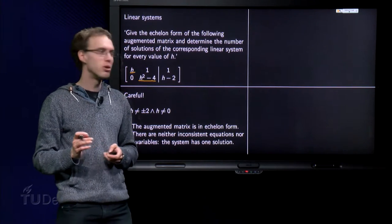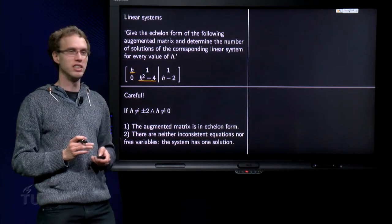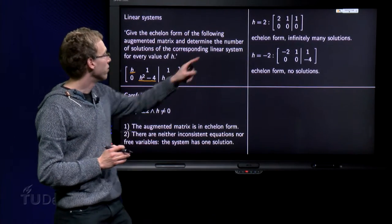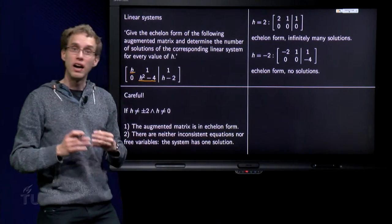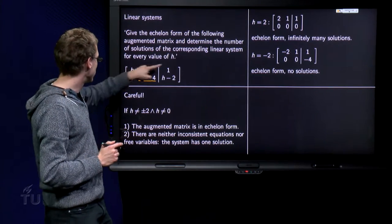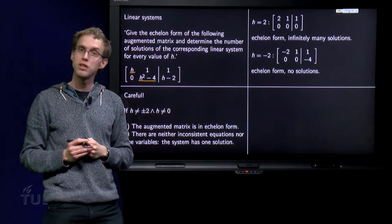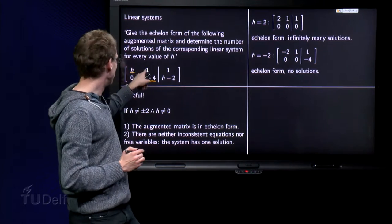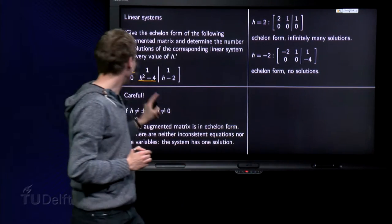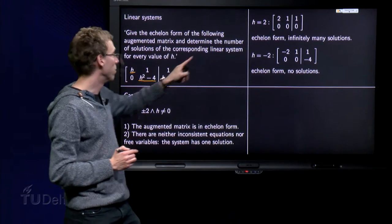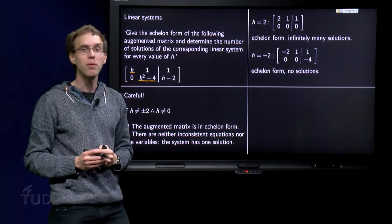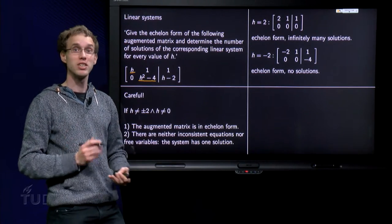Well, let's take a closer look at those other values of h. For example, if you take h equals 2, and just plug in the value of h equals 2 in our augmented matrix. Then we get 2, 1, 1, 2, 1, 1, and here 0, 0, 0. And now, all of a sudden, the augmented matrix looks different.